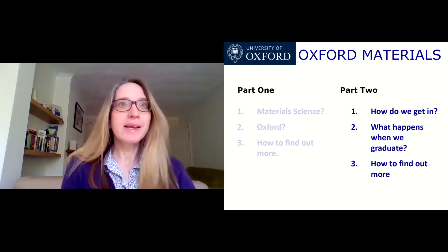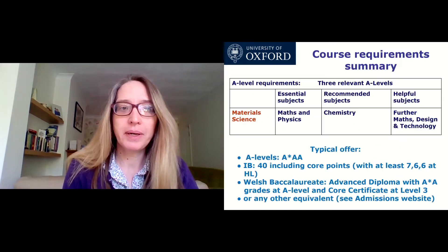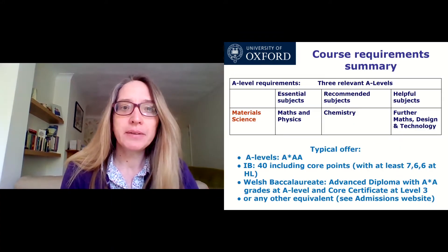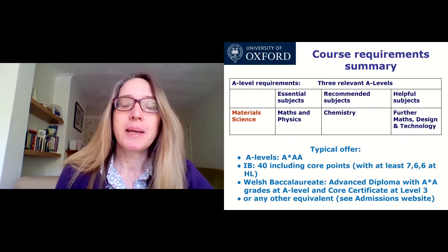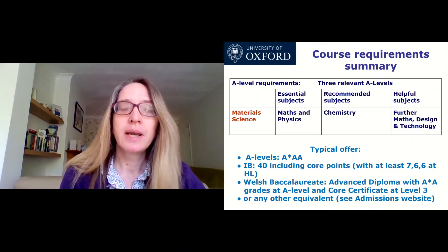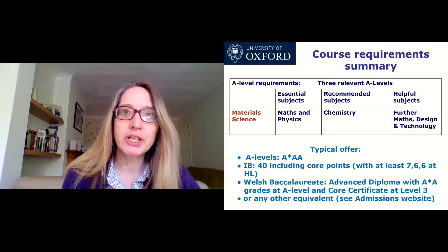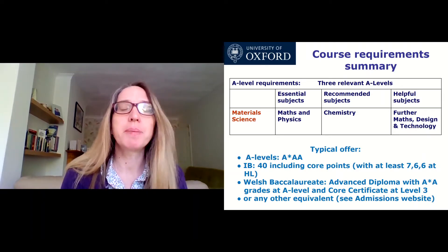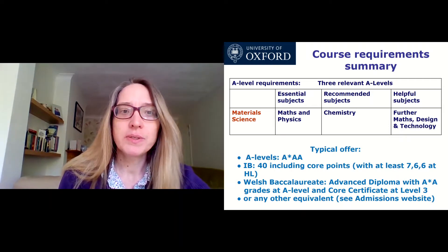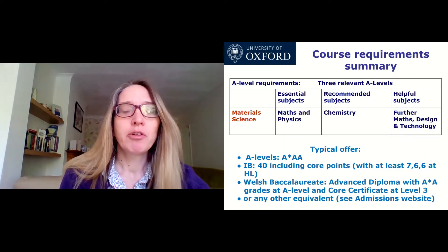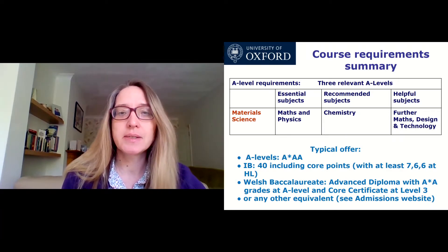Now that you're here, let's explain how the application process works. Applying for Materials Science at Oxford, it is essential that you are studying maths and physics to A-level or equivalent. If you are able to study chemistry alongside that, that would be highly recommended. So if you're in the process of choosing your A-levels, I would suggest that you choose maths, physics and chemistry, which will also allow options of many other physical sciences as well.